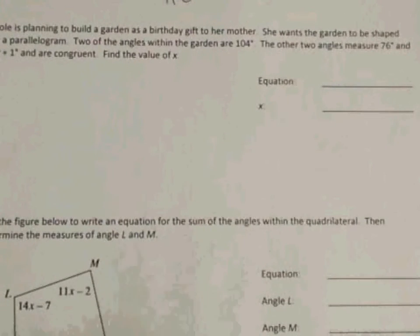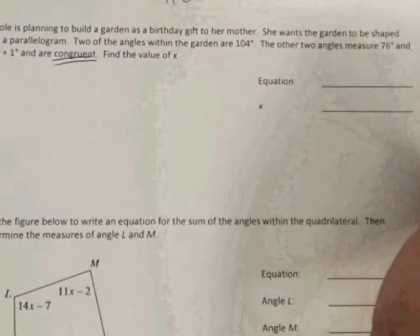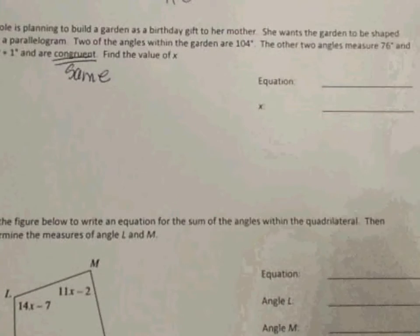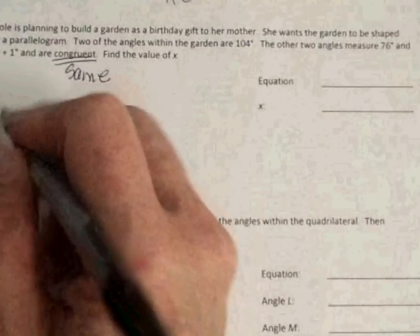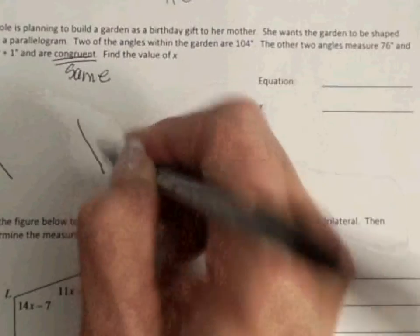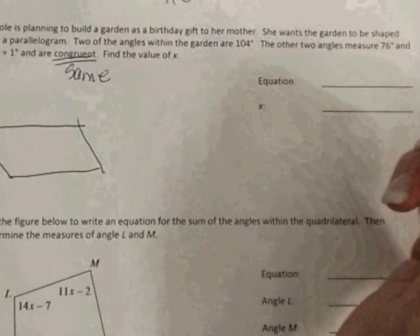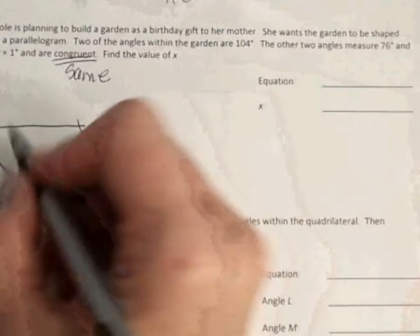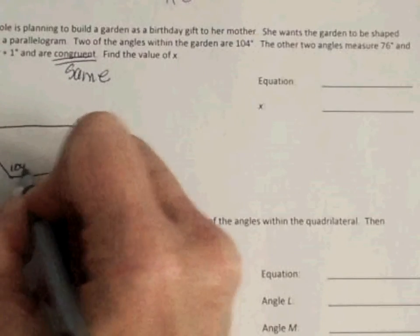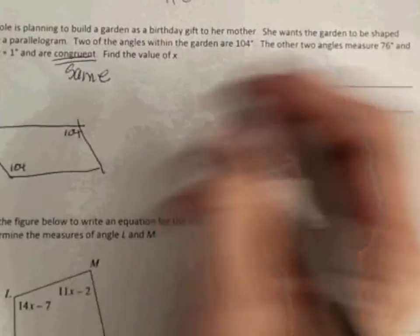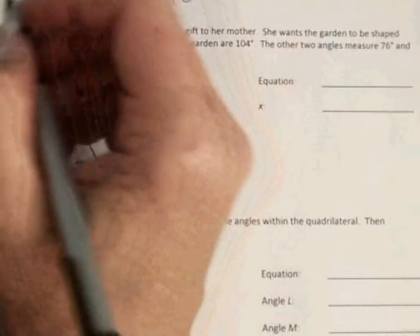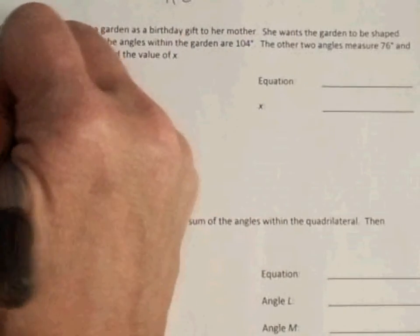And are congruent. Find the value for x. First of all, what does congruent mean? Congruent means they are the same. So we know that parallelogram, we have four angles. So if you need to draw a picture, if that helps you, then go ahead and draw a picture. It may not be to scale, but we know that our angles 104 degrees, they would be our larger ones, or obtuse, they're more than 90. So then we know these ones opposite here are 76 and 25x plus 1.